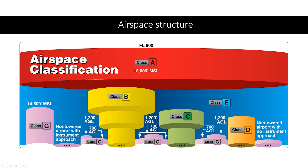Class D airspace is usually around smaller airports with a control tower, and it just looks like a cylinder. We're not allowed to fly in class D airspace. It goes from the surface up to usually 2,500 feet above the surface.